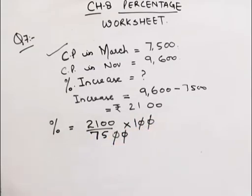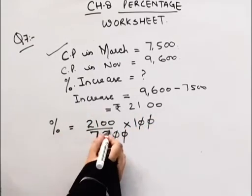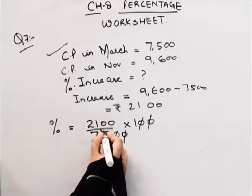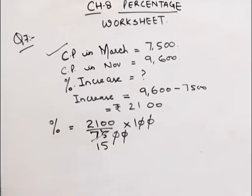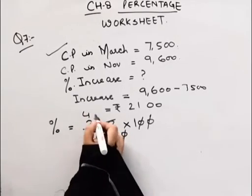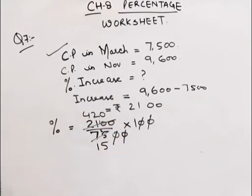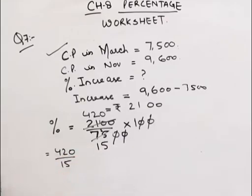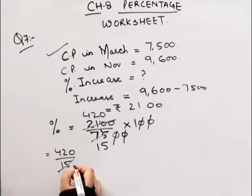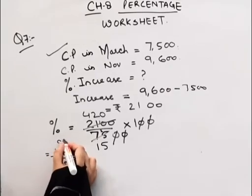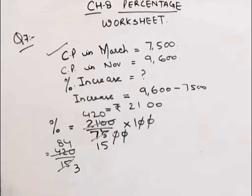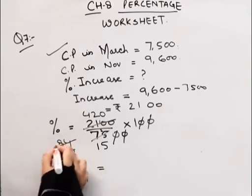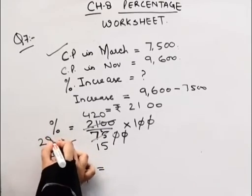2,100 by 7,500 into 100. These cancel out. They both have 5 as a common factor, so I'll divide by 5: 5 ones are 5, 2 here, 5 fives are 25, 5 fours are 20, 1 here, 5 twos are 10, 0. Now 420 by 15. Again they have 5 as a common factor: 5 threes are 15, 5 eights are 40, 5 fours are 20. Now 2 threes are 6, 3 twos are 6, 2 here, 3 eights are 24.